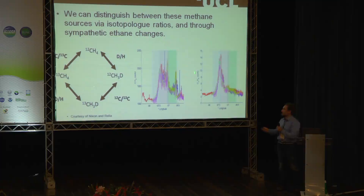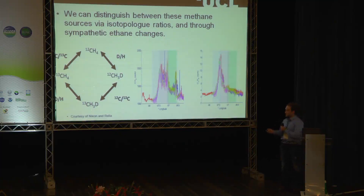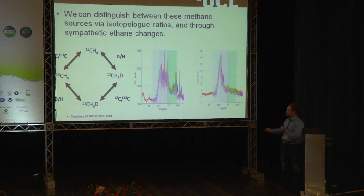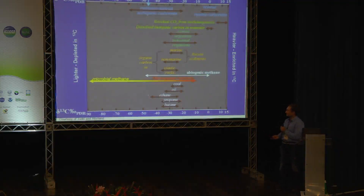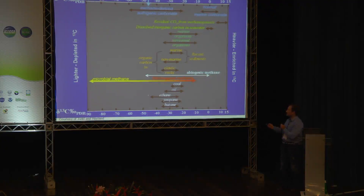The second method is via sympathetic ethane changes. These results were taken by the Picarro Corporation using one of their cavity ring-down spectrometers — measurements taken over Utah over a known biological source. We can see over the biological source there's an increase in methane, and along with this there's a sympathetic increase in ethane. There's a measurable known ratio over a biological source of methane to ethane, which is about 1,000 to 1.